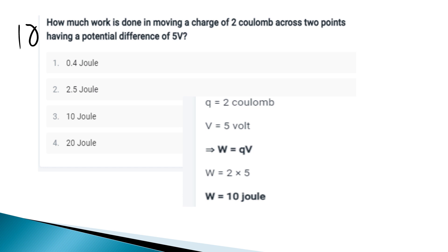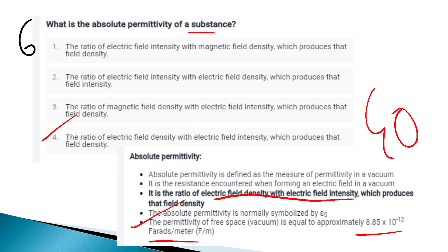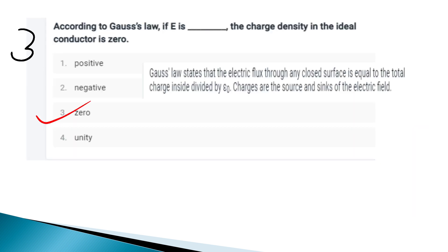How much work is done in moving a charge of 2 coulombs across two points having a potential difference of 5 volts? Using the formula W = q × V, with q = 2 coulombs and V = 5 volts, the answer is 10 joules. We have covered 10 questions on Electrostatics. Next, we will take questions on Electromagnetism.